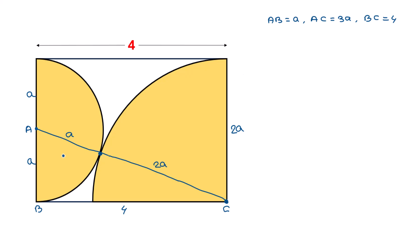Now applying the Pythagorean theorem to triangle ABC: AC² equals AB² plus BC². Substituting the values — AC is 3a, AB is a, and BC is 4.